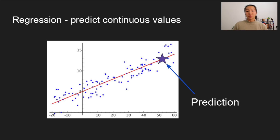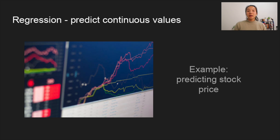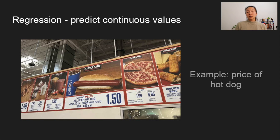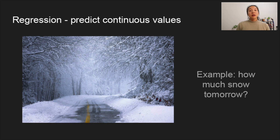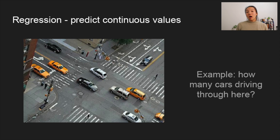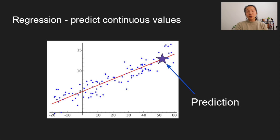The other type of output we can predict is numerical, which is known as regression. That's when we want to predict continuous values. Examples include: what is the price of Apple stock a week from now? What is the value of a house given metrics like number of bedrooms, square footage, and zip code? Or how much snowfall will we get tomorrow? Or how many cars might drive through an intersection given a time of day and day of week? These are all forms of regression — we're trying to pinpoint a value on a continuous scale rather than fitting into a fixed set of categories.